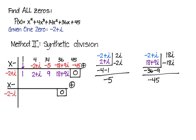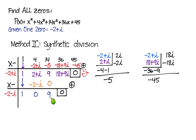Now we move on to the second division, dividing by negative 2 minus i. We bring down the 1, multiply by (negative 2 minus i), and write it in the next column. Adding those terms, the i's cancel and we're left with zero. Then zero times (negative 2 minus i) is just zero. We add 9 plus zero to get 9. We must multiply 9 times (negative 2 minus i): that gives negative 18 minus 9i. Adding gives zero — no remainder. The result is x squared plus 0x plus 9, or simply x squared plus 9.